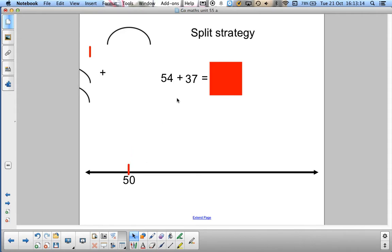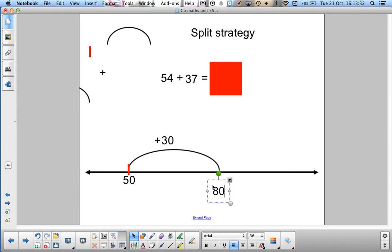And the first jump we're going to make is a jump of 30. So 50 plus 30 is 80. This is where we land. We'll mark it on the number line.